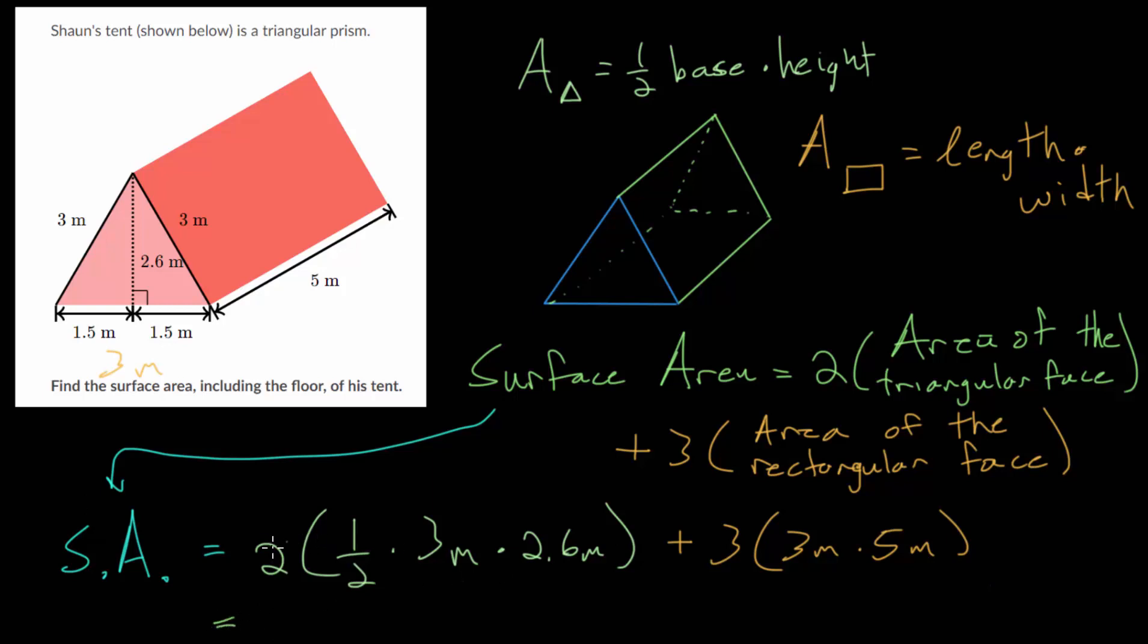Now, calculating each of these, let's see. Since we have twice half of this product, the 2s will cancel out. So we just get 3 meters times 2.6 meters.